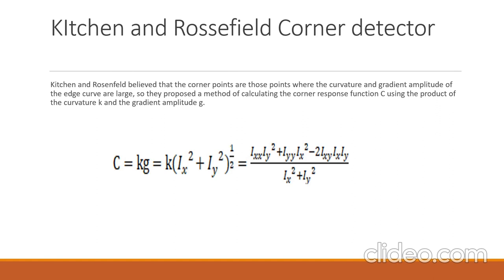Kitchen and Rosenfield believed that corner points are those points where curvature and gradient amplitude of the edge curve are large. So they proposed a method of calculating corner response function C using the product of curvature K and gradient amplitude G. By setting a threshold on the value of C, we can get the corner points.